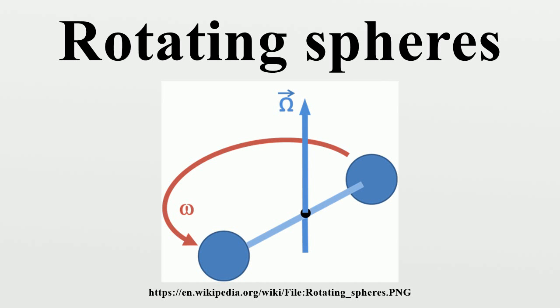The basis of the argument is that all observers make two observations: the tension in the string joining the bodies and the rate of rotation of the spheres. Only for the truly non-rotating observer will the tension in the string be explained using only the observed rate of rotation. For all other observers, a correction is required that accounts for the tension calculated being different from the one expected using the observed rate of rotation.